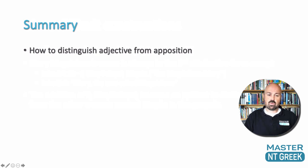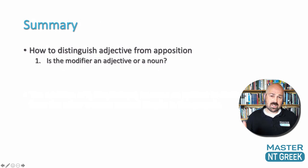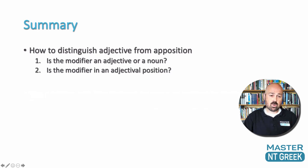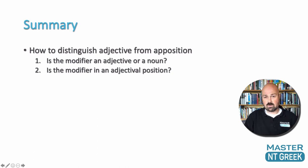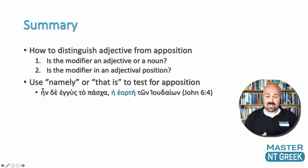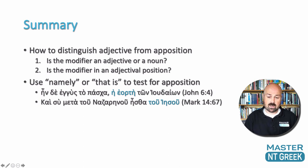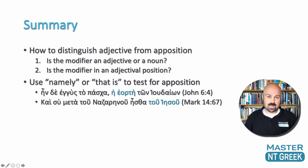In summary, remember the two rules for distinguishing an adjective from apposition. First: is the modifier an adjective or a noun? If it's an adjective, you may have an adjectival construction. Second: is the modifier in an adjectival position? If the answer is yes to both questions, you definitely have an adjective. If the answer is no, you may be looking at an appositional form. To test an appositional form, use phrases like 'namely' or 'that is' — for instance, 'the Passover was near, that is, the feast of the Jews,' or 'you were with the Nazarene, namely Jesus.' Don't get stuck with adjectives and appositions — understand the distinction and you won't have any trouble translating these.